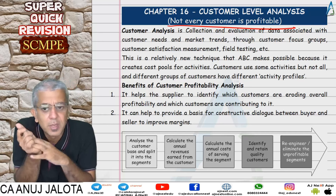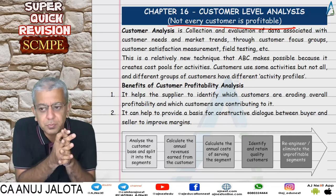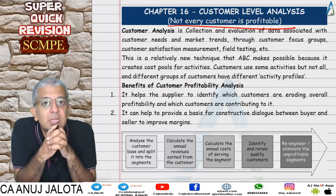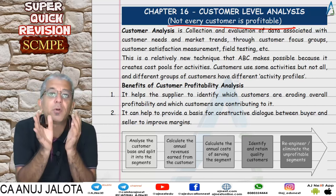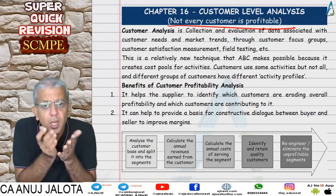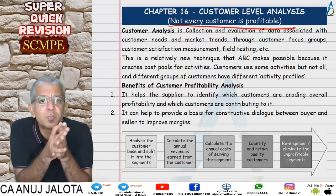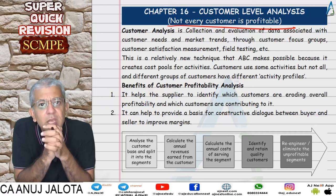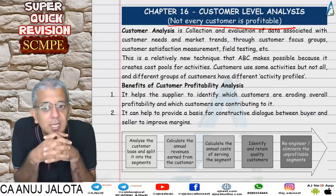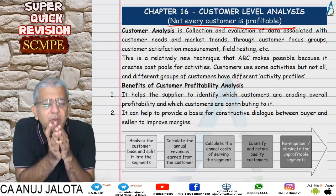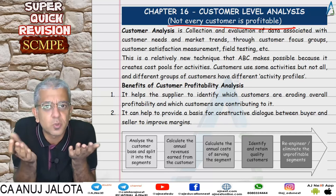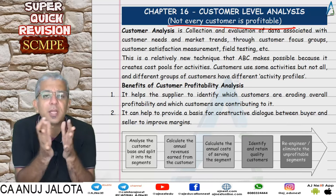Once you find the profit from each customer, you analyze whether the profit is good. If you're earning good profits, keep that customer. If you're earning less profit, first find out why. One way is cost reduction — if reducing costs increases profit, implement it. If a customer still can't be turned profitable, think about stopping business with them and diverting resources toward more profitable customers.